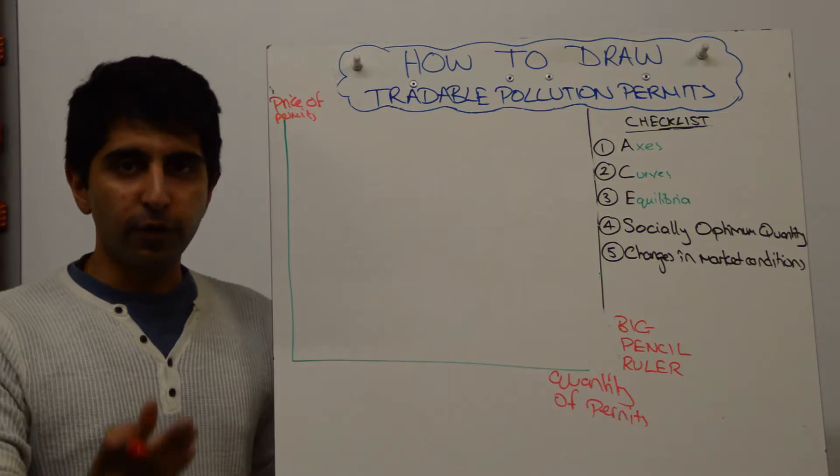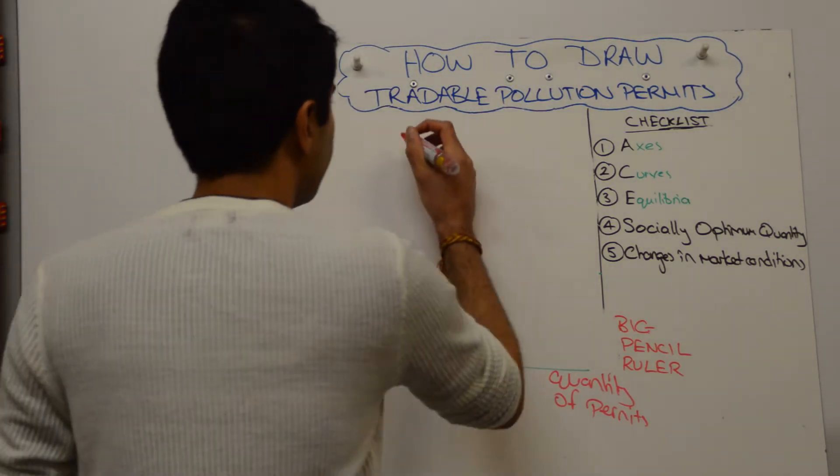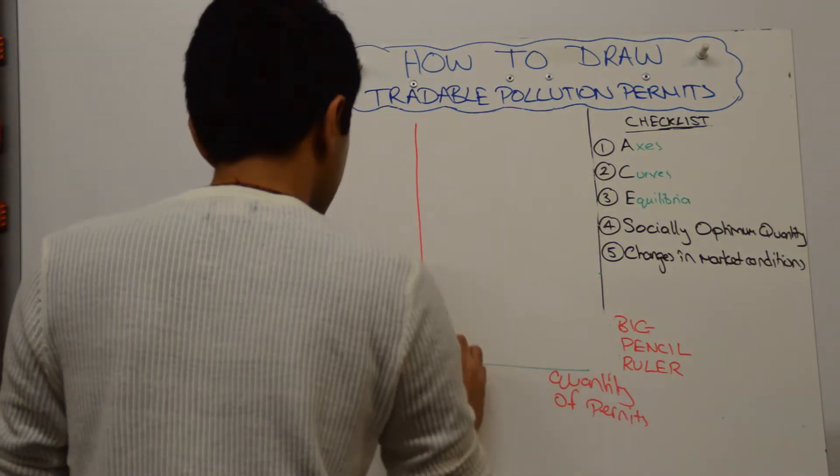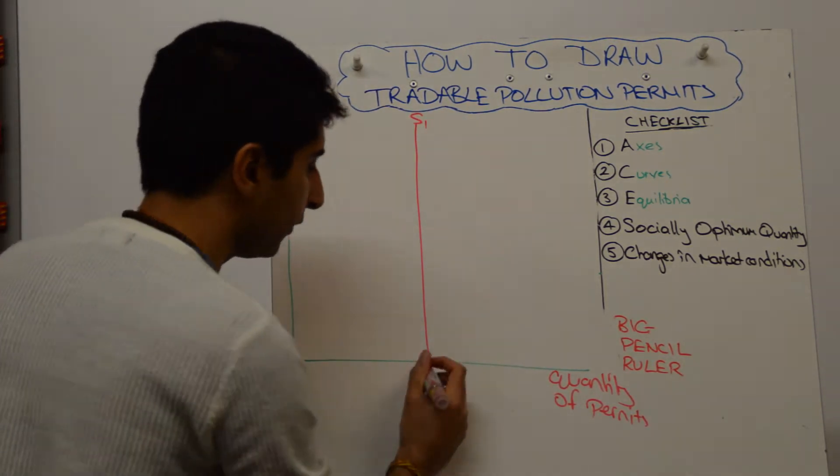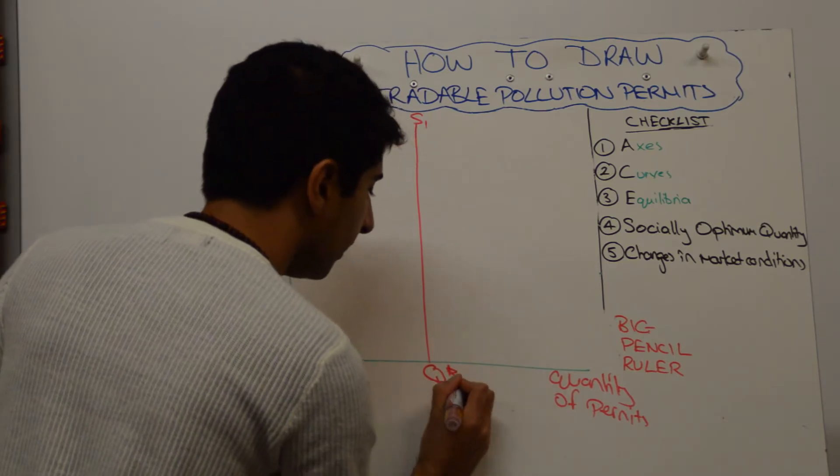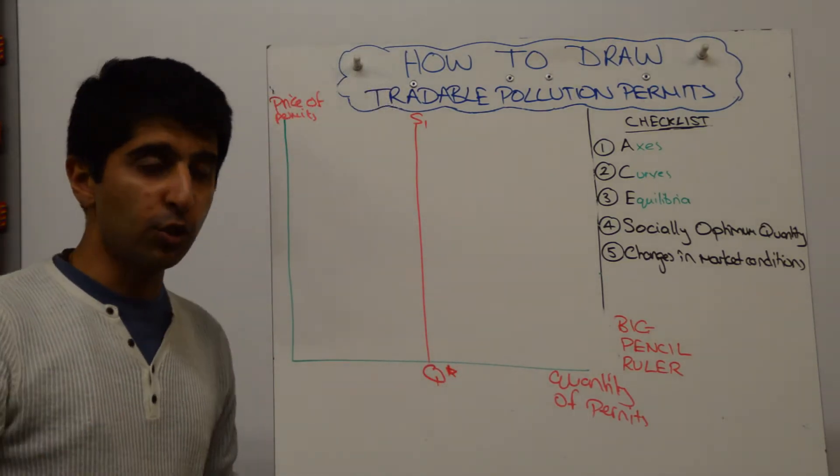The government issues permits, so there is a fixed supply of permits. So we have to draw a perfectly inelastic supply curve, a vertical supply curve there. And that gives us the quantity. So the government decides the quantity of permits issued in an economy.